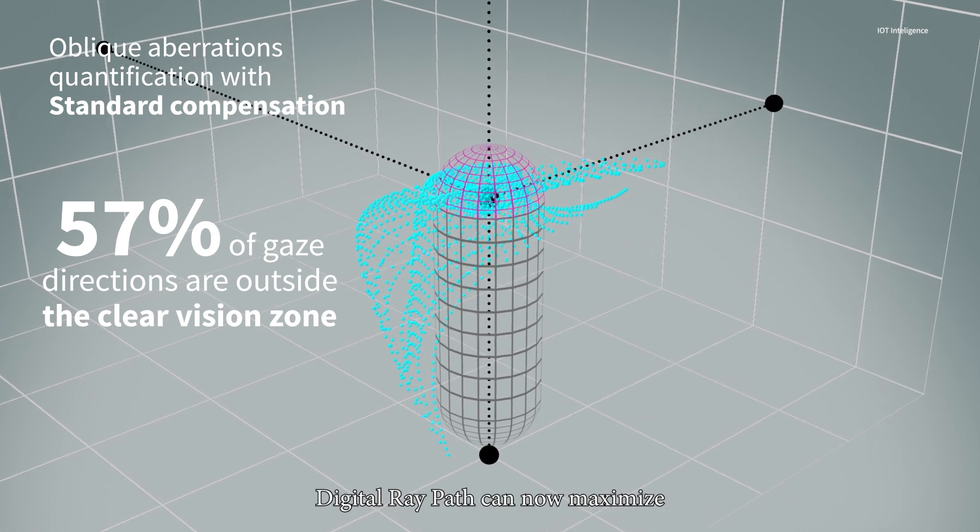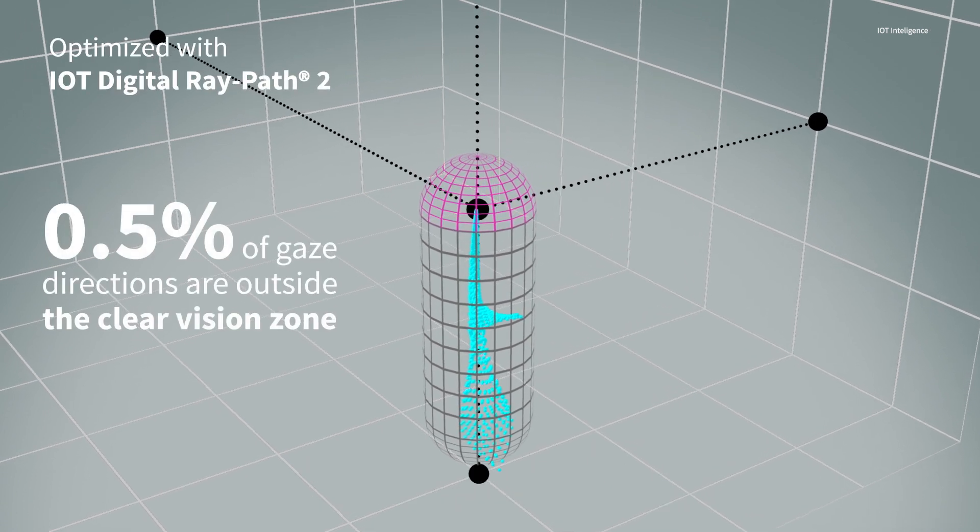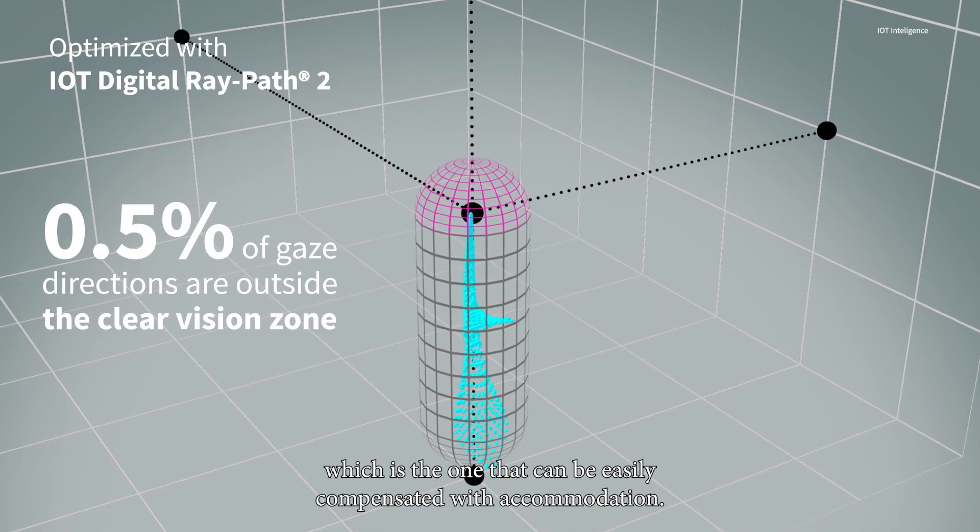Digital ray path can now maximize the reduction in cylindrical power error and keep the residual sphere component, which is the one that can be easily compensated with accommodation.